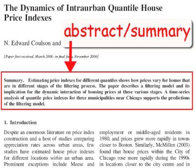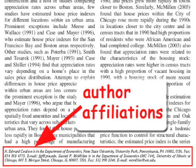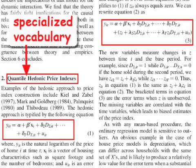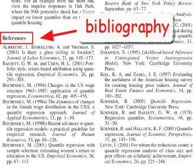An abstract: a one-paragraph summary of the article at the beginning. The author affiliations — where the authors work — usually listed at the bottom of the first page. Look for the use of specialized vocabulary, or in some fields, the presence of graphs or statistical tables. Finally, a bibliography: a list of citations to articles and books at the end of the article.